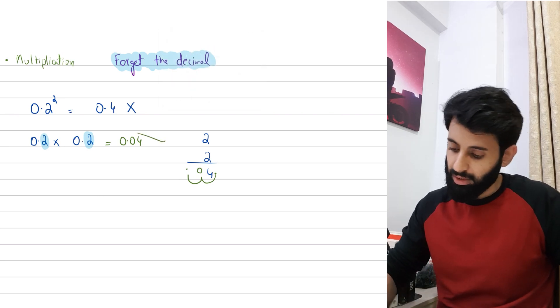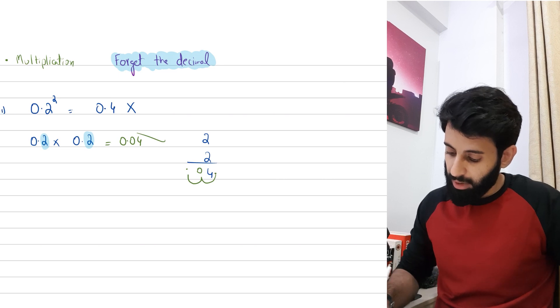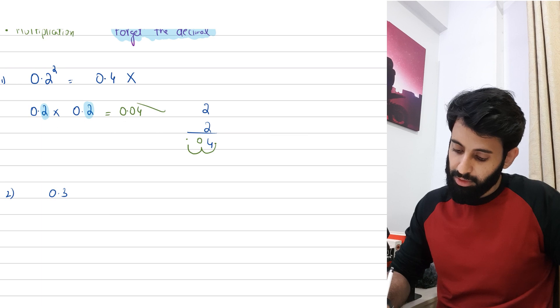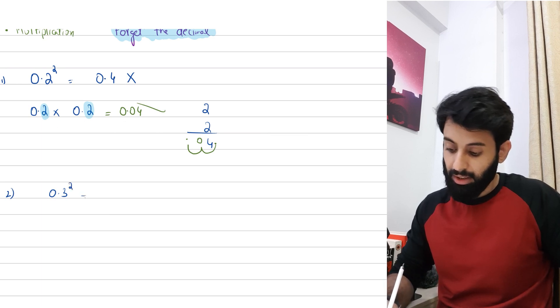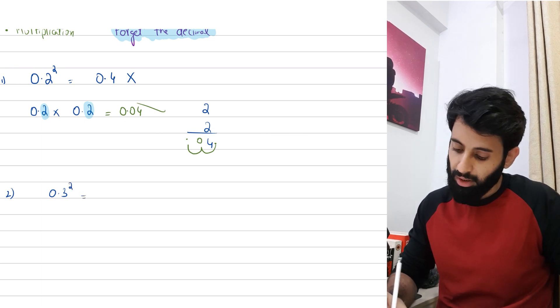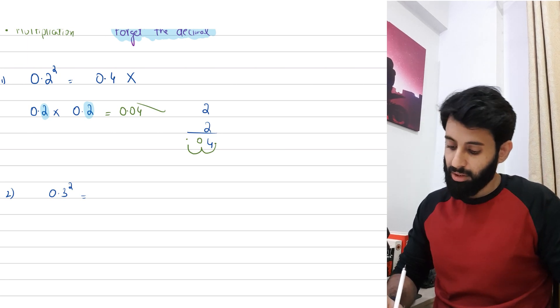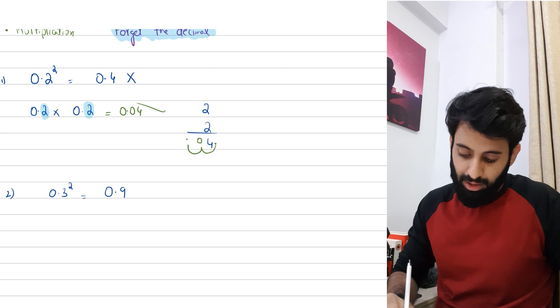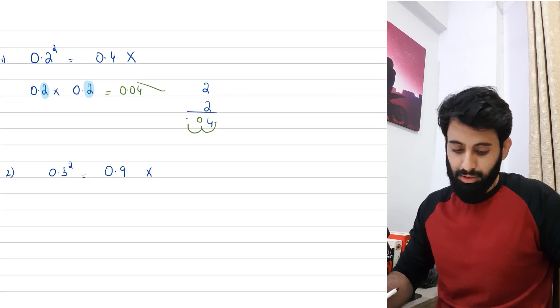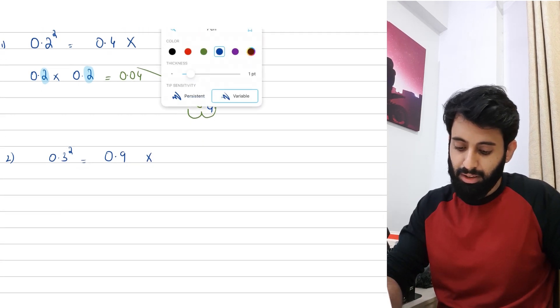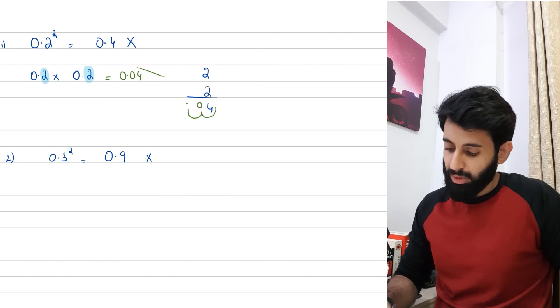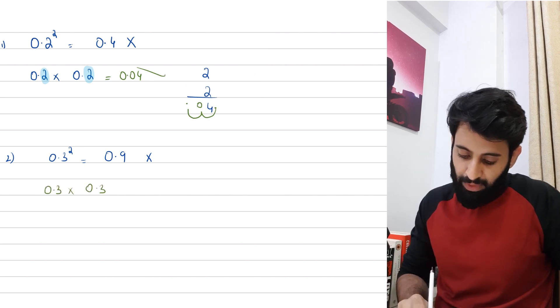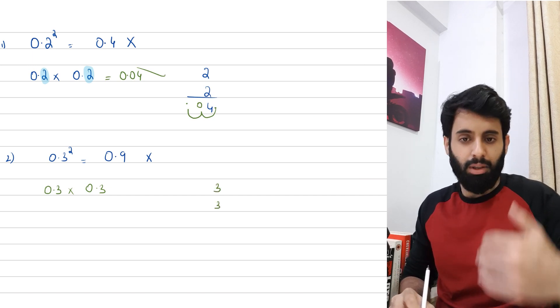If this made sense, that's great. If it didn't, nothing to worry about, I have plenty of more examples lined up for you. Let's say you're given 0.3 squared, which basically means 0.3 times 0.3. Now again, I'm sure a lot of you would be tempted to say 0.3 squared is 0.9, well you're wrong.